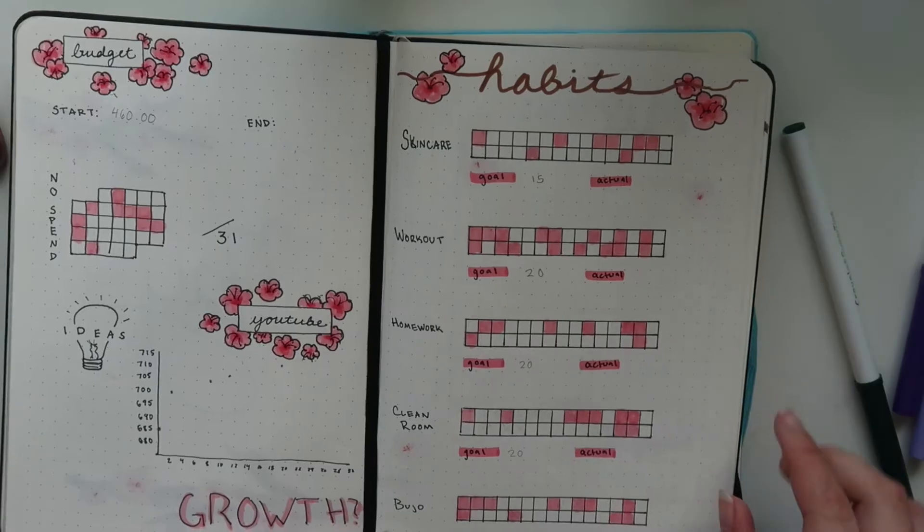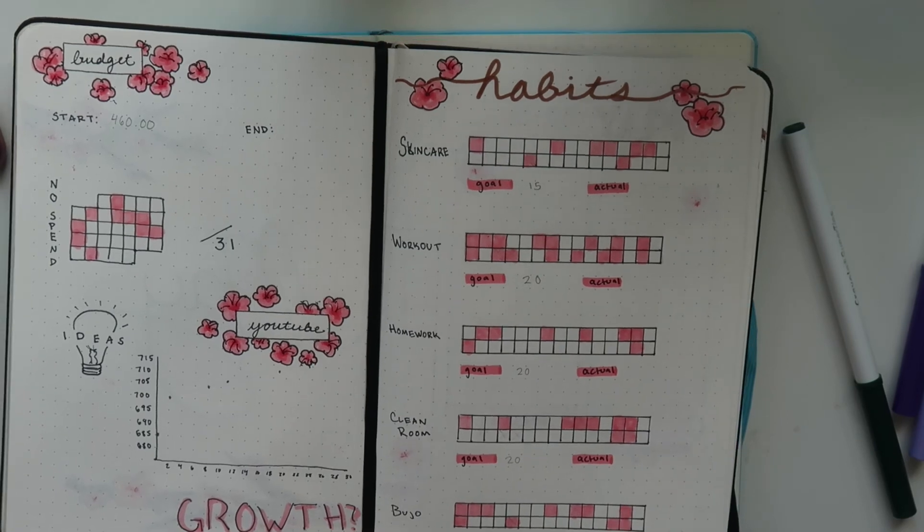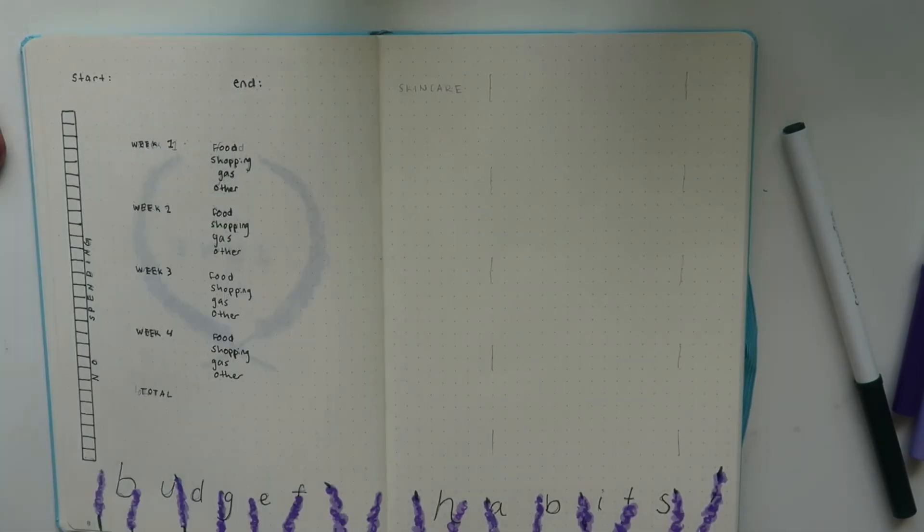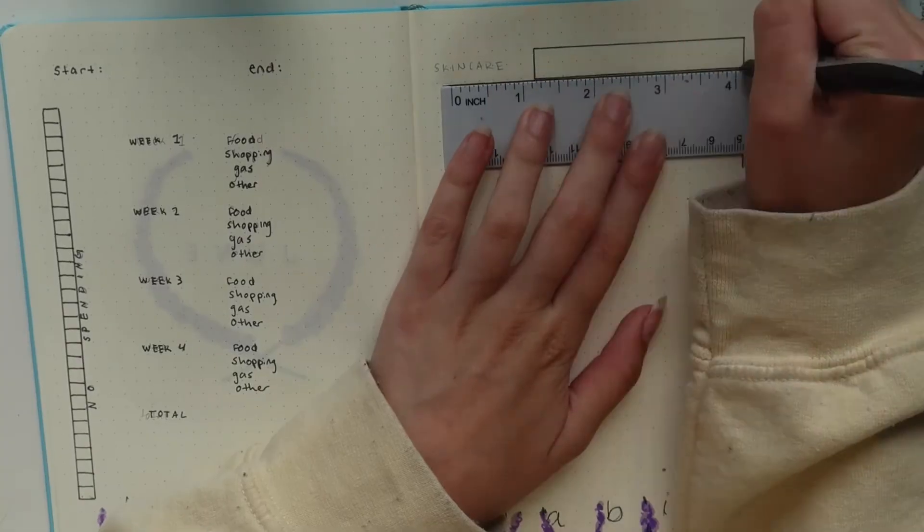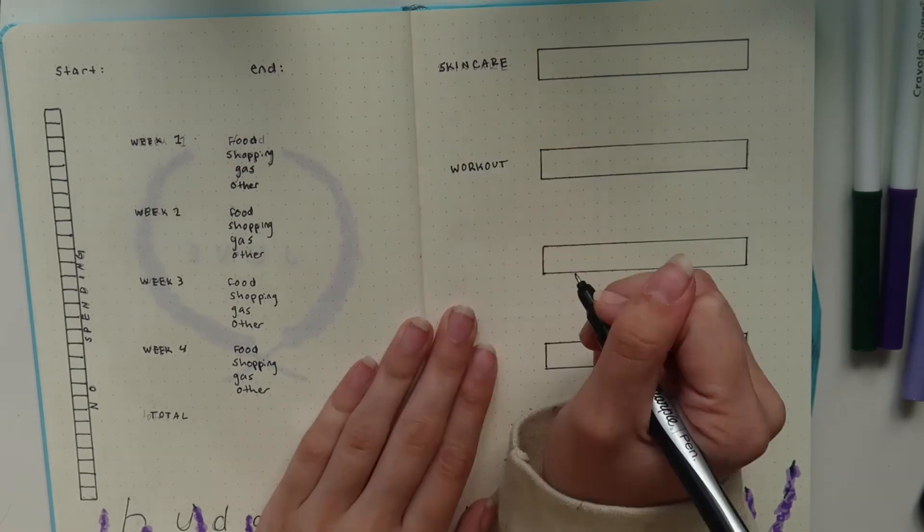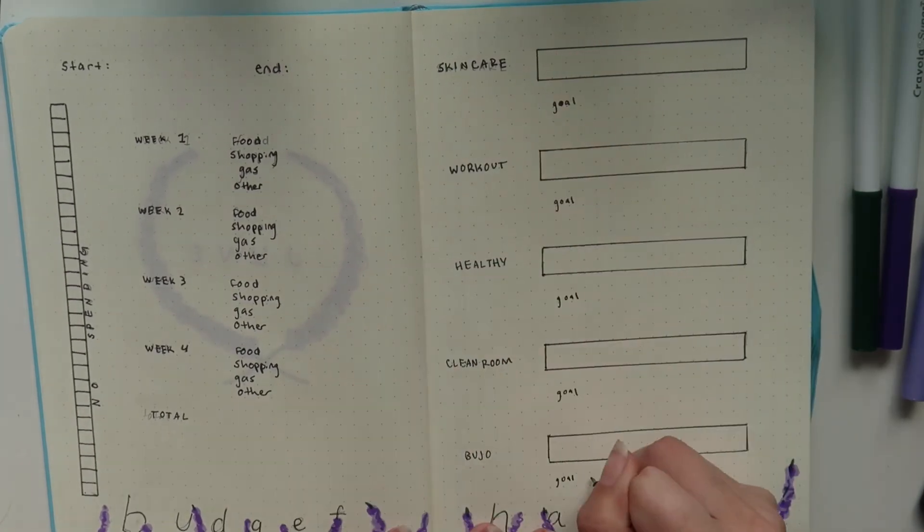For my habits page, I'm keeping it pretty similar to last month's habit page with just a couple key habits there, and then I just kind of color in the blocks. I like that a lot because I can focus on each habit and kind of see. So I'm just gonna do that.